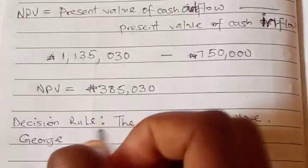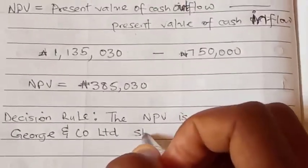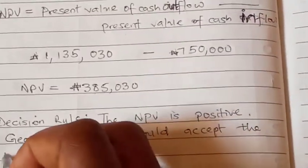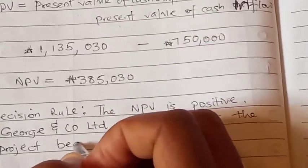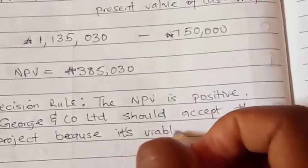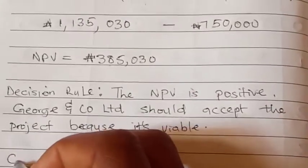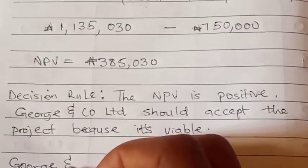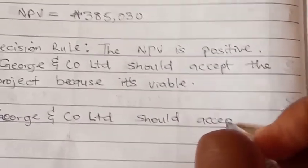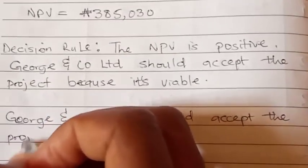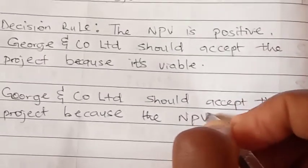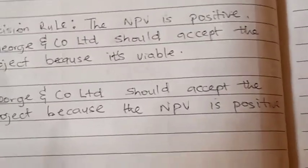The present value of cash inflow is greater than the present value of cash outflow. This is the difference, so this means that the NPV is positive. George and Co Limited should accept the project because it's viable.